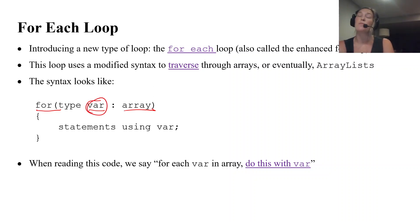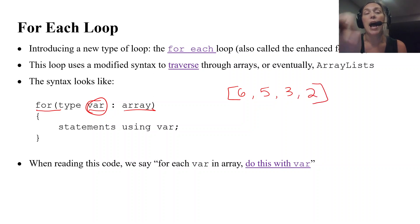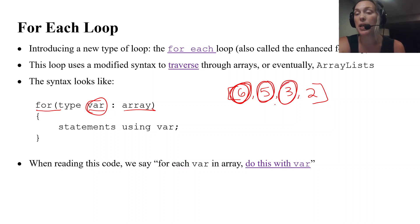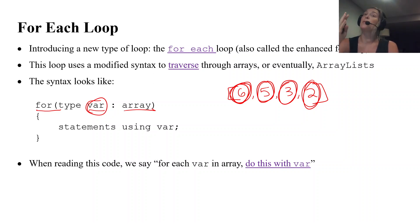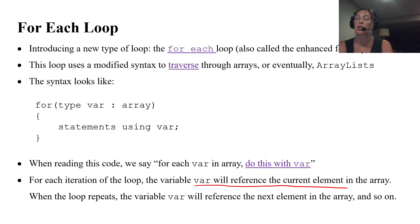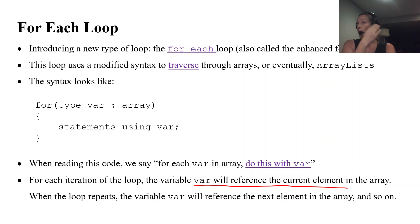When reading this code we say 'for each var in array, do this with var,' meaning that in each iteration, var represents an element. For example, with an array of ints, the first time through var would be 6, the second time 5, the third time 3, and the fourth time 2. The variable references the current element and changes to the next element each loop. This allows us to traverse without using an index.